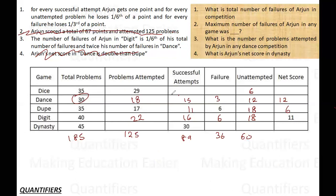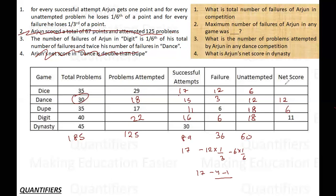Now Dice and Dynasty are left. For Dice, total correct across all games is 89. Subtracting known values: 30+16+11+15 = 72, so Dice correct = 17. Problems attempted in Dice are 29, successful are 17, so failures = 12. Net score: 17 − 12×(1/3) − 6×(1/6) = 17 − 4 − 1 = 12. Total net scores so far: 12+12+6+11 = 41, so Dynasty net score = 67 − 41 = 26.